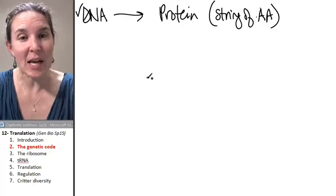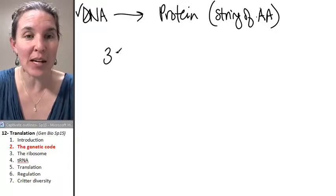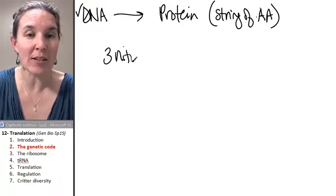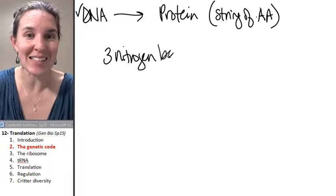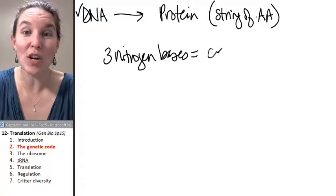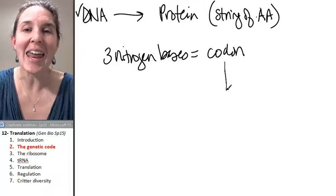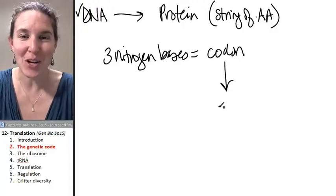And it does it because every three nitrogen bases equals a codon. And every codon codes for one amino acid.